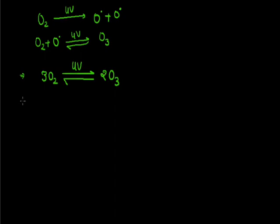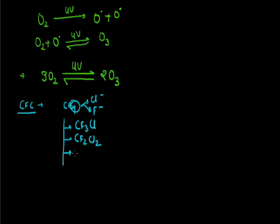CFC is the main pollutant that causes ozone depletion. CFC is chlorofluorocarbon, meaning carbon in methane where hydrogen is replaced by chloride and fluoride to form chlorofluorocarbons. Various chlorofluorocarbons can be formed like CF3Cl, CF2Cl2, and CFCl3.